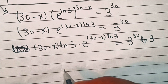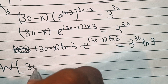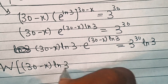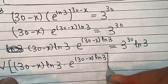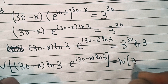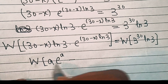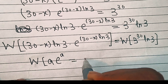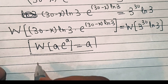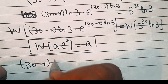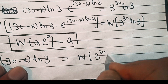Now we'll apply the Lambert W function or Omega function on both sides. So this is W of (30 minus x) into e power (30 minus x) ln(3) equal to W of 3 power 30 times ln(3). Using the identity W(a · e^a) = a, this will become 30 minus x times ln(3) equal to W of 3 power 30 into ln(3).